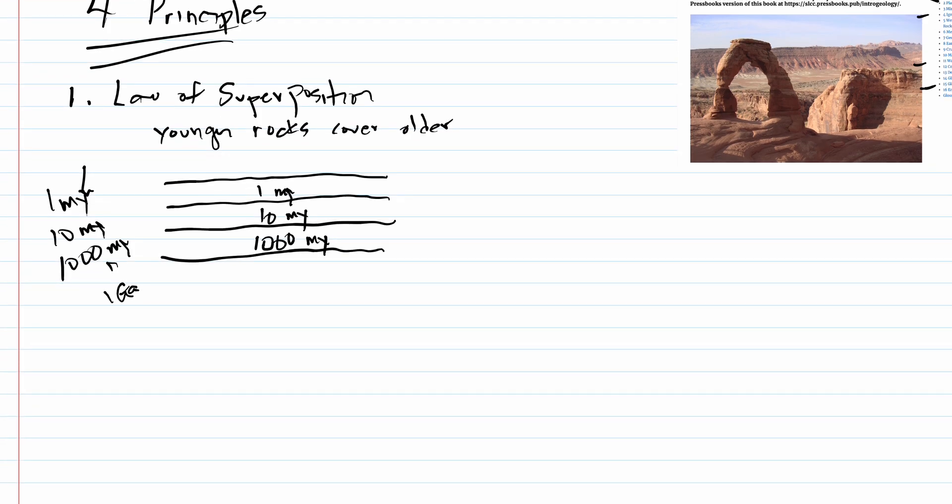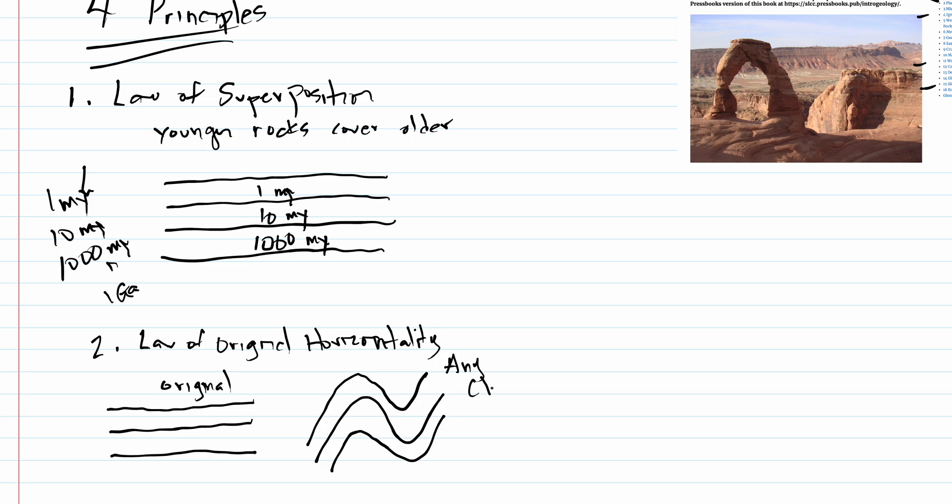Number two is the law of original horizontality. The idea of original horizontality is that rock layers are deposited horizontal. Rocks are deposited horizontally. And if you see rocks out in the field or in pictures that are folded or broken or in any way not horizontal, that means they've been modified. So according to this law, this is original. And this is any change. If we see any change to that original horizontality, we would say that they've been acted on by a geologic process.